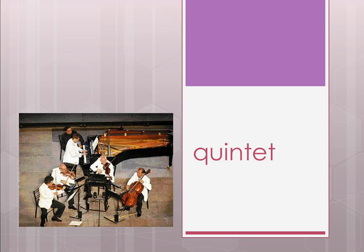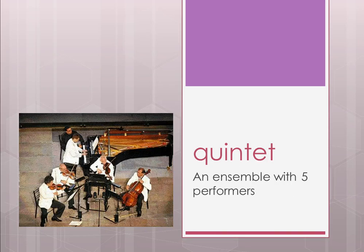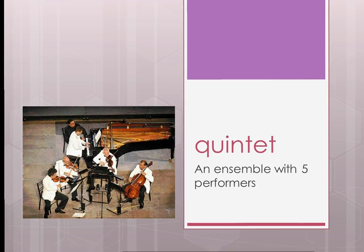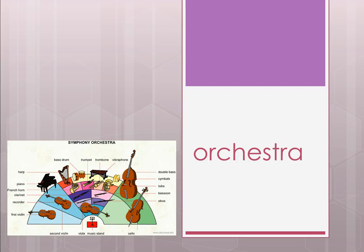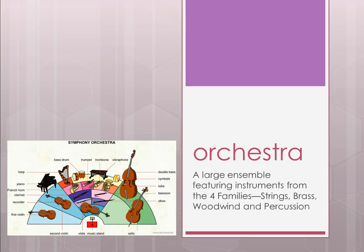A quintet is an ensemble with five performers — for example, a cello, viola, two violins, and a piano. The person in black is a page turner, not a performer. A quintet can be any five instruments. An orchestra, on the other hand, is a large ensemble featuring instruments from all four families: strings, brass, woodwind, and percussion. It can range from around 15 to 200 players depending on size and budget.